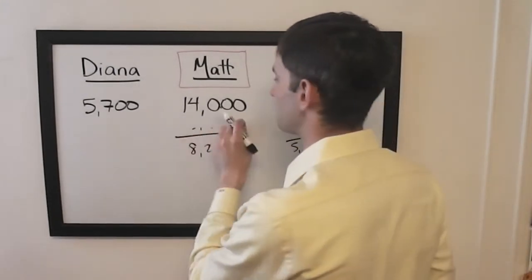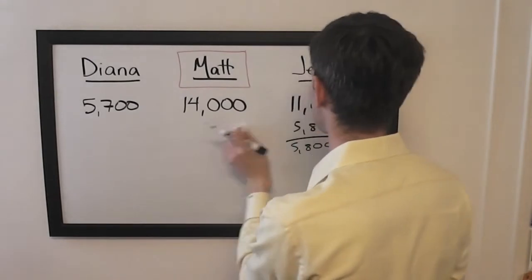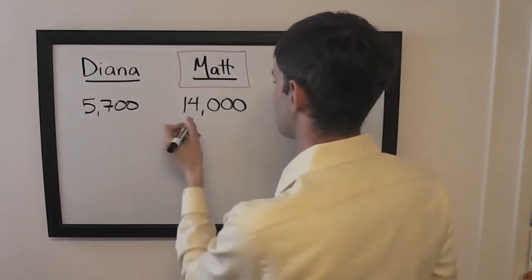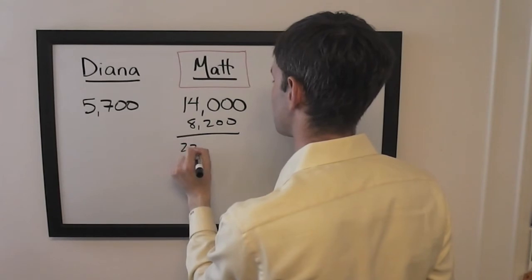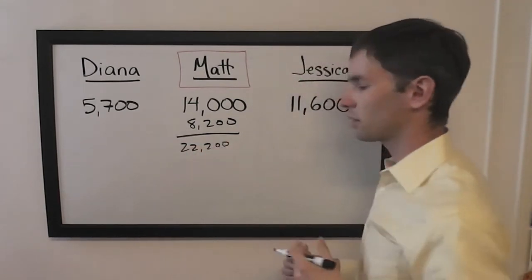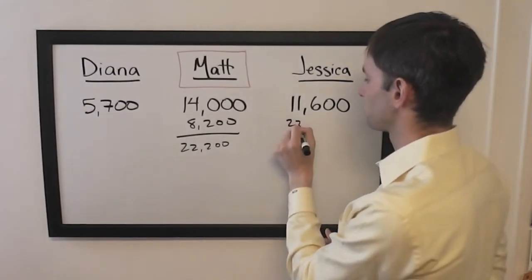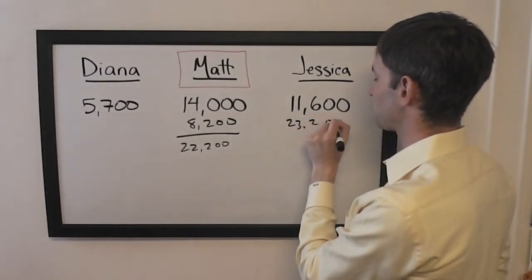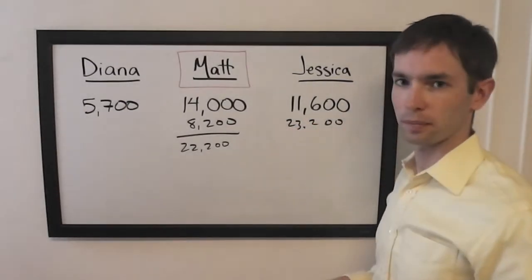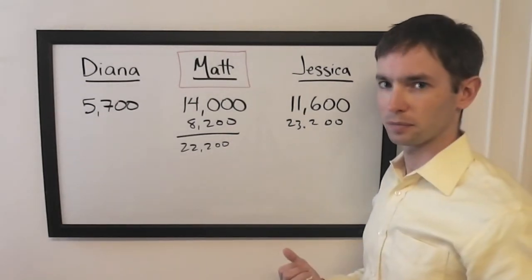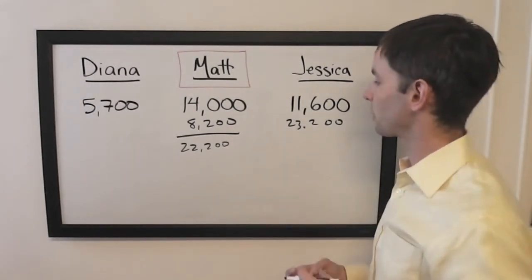Let's see what happens if he gets it right. If he gets it right, he's going to have 22,200. Jessica, if she doubles up, is going to have 23,200. So Matt will just need to wager 1,000 to lock out Jessica.